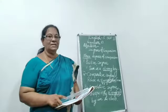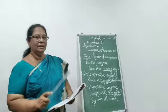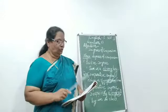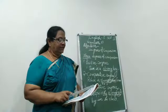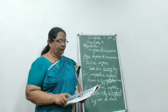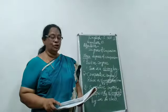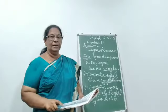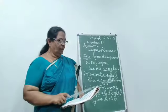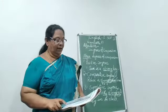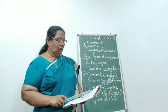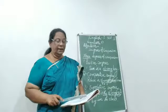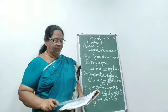Fourth rule: adjectives ending in a vowel plus 'y'. How many vowels are there? Five — A, E, I, O, U. For these, add 'er' to form the comparative and 'est' to form the superlative. Like: grey, greyer, greyest. Fifth rule: words with a single consonant at the end — double the final letter. Like: big, bigger, biggest. Hot, hotter, hottest. Wet, wetter, wettest.